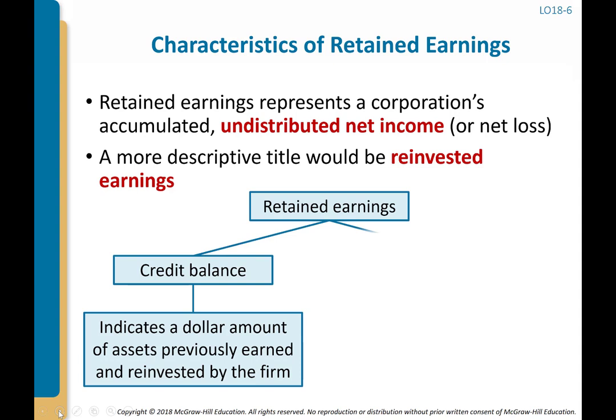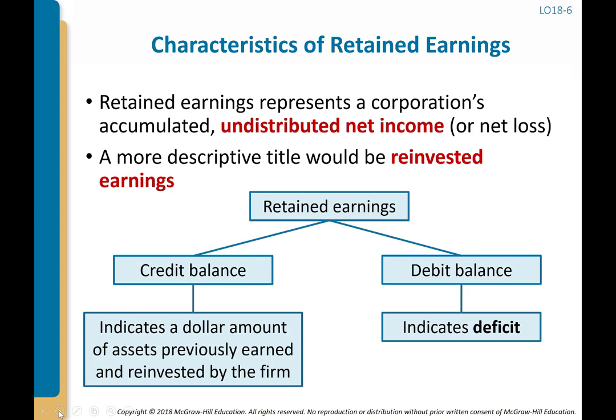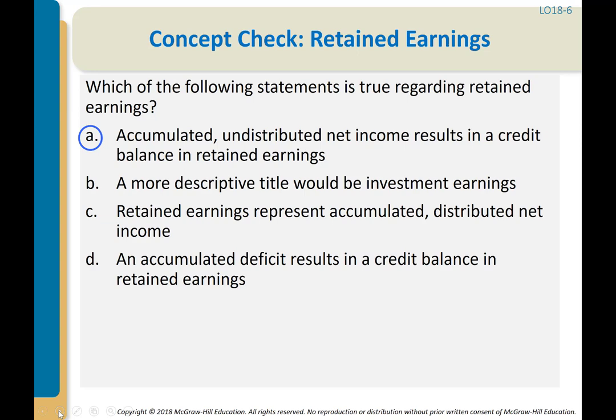Retained earnings typically has a credit balance, though it could have a debit balance if the company has had losses or paid out excessive dividends. Retained earnings starts at zero at the beginning of the company, increases with net income over the years, and decreases with dividends paid. Treasury stock transactions where shares are repurchased above the original issue price can also reduce retained earnings.